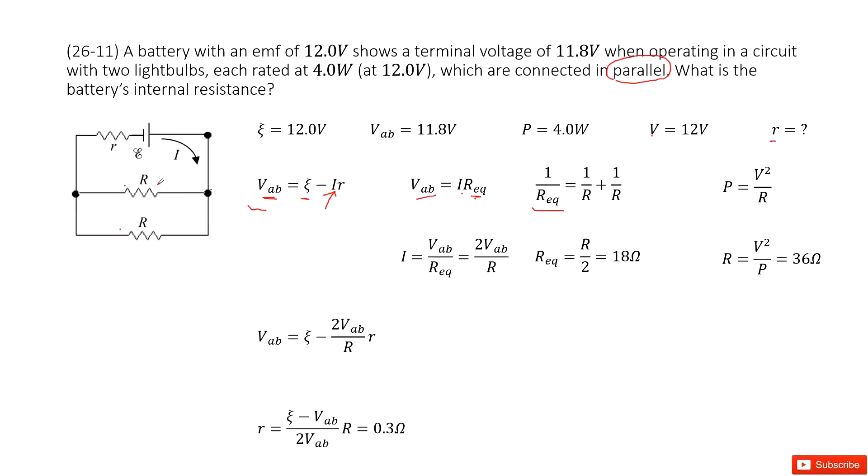To get the equivalent resistance for these two light bulbs, we first need to know the resistance for each light bulb. This is straightforward because power equals voltage squared divided by resistance. From this function, we input all the given quantities and get that each light bulb has a resistance of 36 ohms.